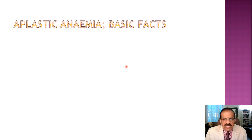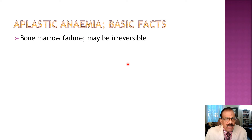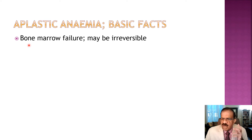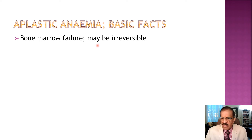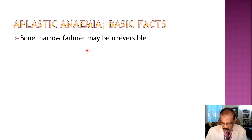Some basic facts about aplastic anemia: it is primarily a disorder of the bone marrow, which fails to function. The marrow may be structurally damaged or immunologically suppressed. Sometimes bone marrow failure may be temporarily reversible, but mostly it is irreversible and requires bone marrow transplantation or other treatment. In some cases it may improve on its own or with immunosuppressant drugs.